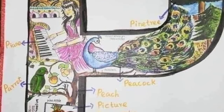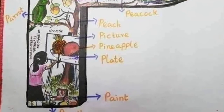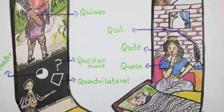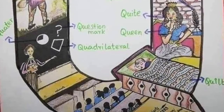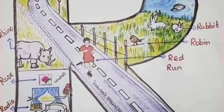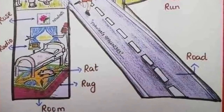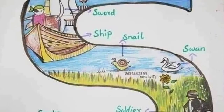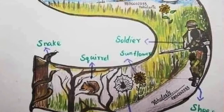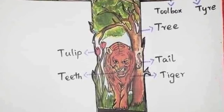P for peacock, Q for cute, R for road, S for ship, T for tree.